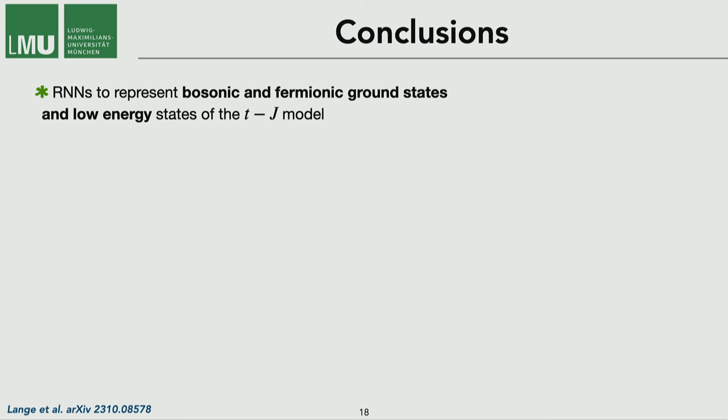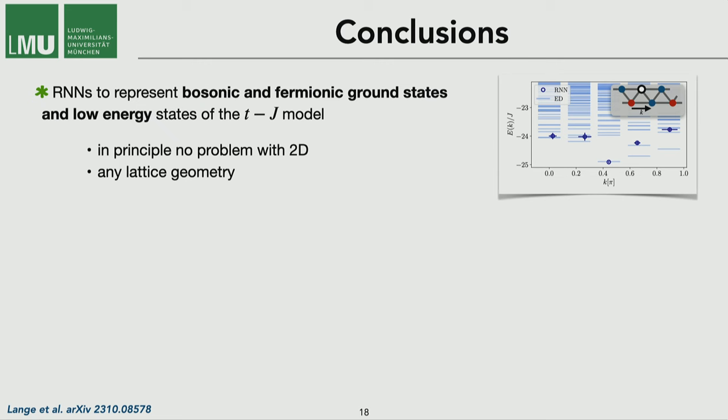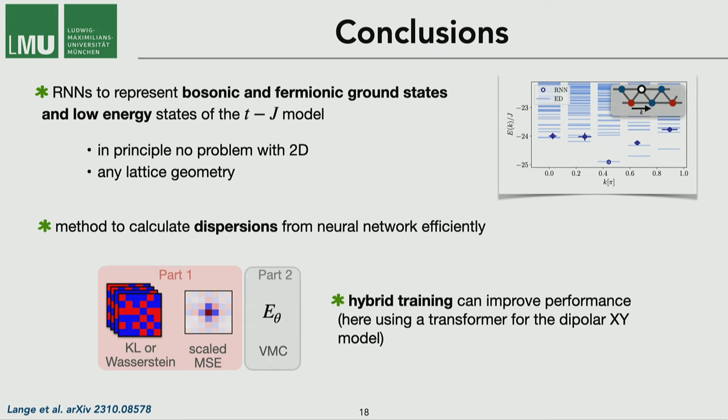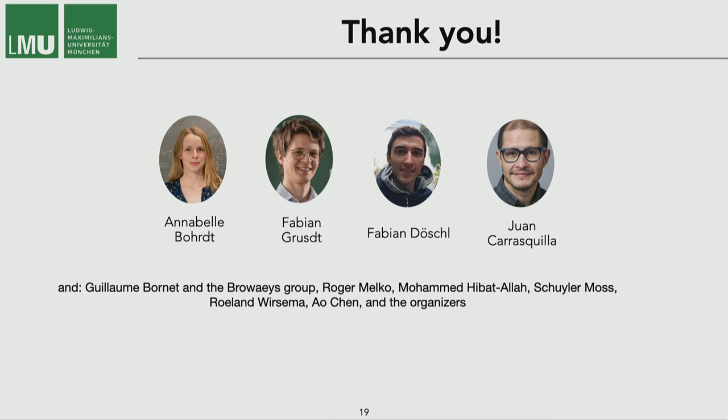So with this, I am at the end of my talk and I conclude. I was showing you how to use the RNN to represent bosonic and fermionic ground states of the TJ model. In principle, this tensorized RNN doesn't have any problem with two-dimensional data and it's also adaptable to any lattice geometry. And then at the end, I showed you one way to calculate dispersion relations from NQS. And in between, I had this intermediate interlude on hybrid training and showed that it can improve the performance. So with this, I want to thank all my supervisors and collaborators and the organizers and the audience.